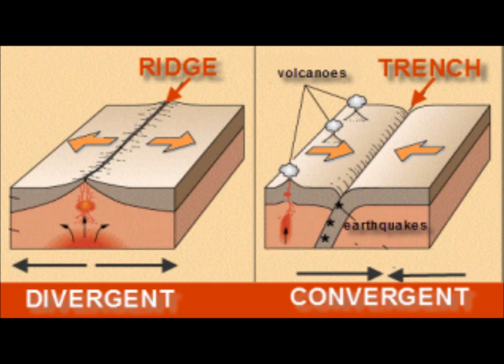The two we'll be looking at today are convergent, because that is of course where all the people are. These volcanoes form when a tectonic plate goes under another and pushes up, causing rocks, minerals, and other deep earth components to be pushed to the surface.